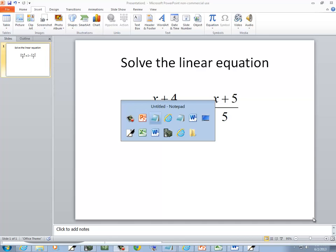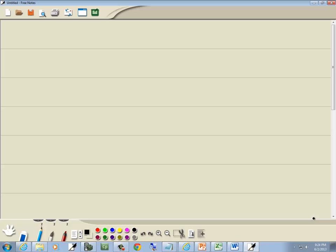Let's solve this linear equation: x plus 4 over 6 equals 2 minus x plus 5 over 5. And let's go through our four steps.